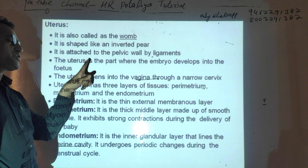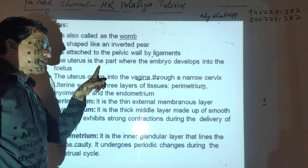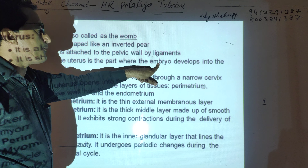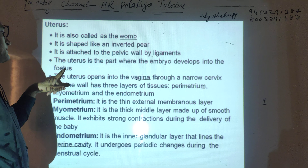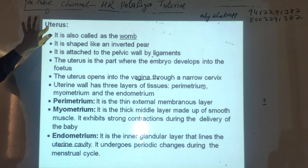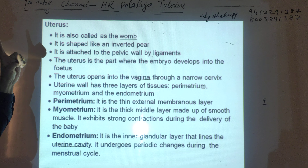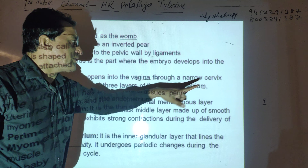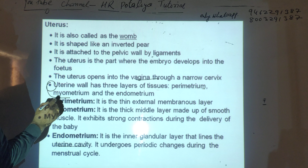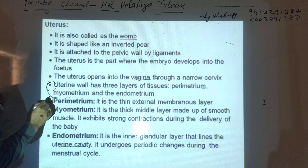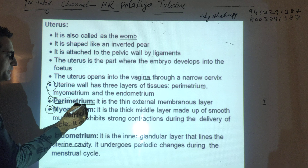The uterus is the part where the fertilized egg, in the form of an embryo, holds the pregnancy. It is responsible for the menstrual cycle, holds the developing embryo, changes the embryo into the fetus, and facilitates placenta formation. The uterus opens into the vaginal region via the narrow cervix. The uterus consists of three layers.